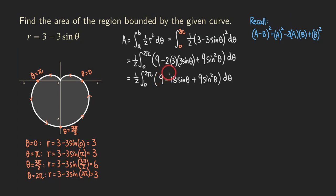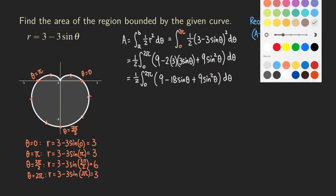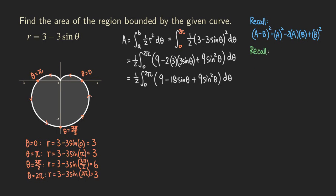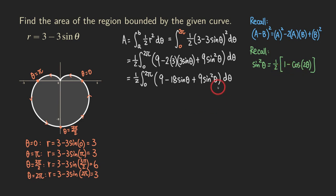We can integrate the 9 easily and the negative 18 sine theta easily, but the 9 sine squared theta requires the half-angle formula because of the square on the sine. The half-angle formula is: sine squared theta equals one half times (1 minus cosine of 2 theta). This turns the sine squared into an expression with a trig function of power one, which we can integrate directly.